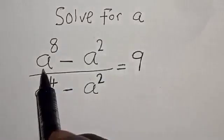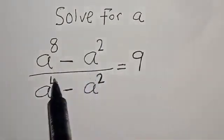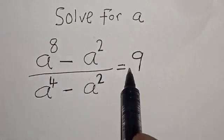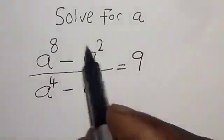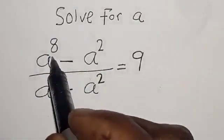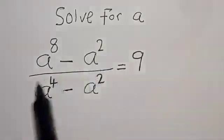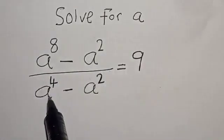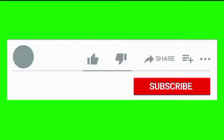Solve for x: a raised to power 8 minus a squared, divided by a raised to power 4 minus a squared, is equal to 9. Hi everyone, welcome to my class. In this class we want to find the value of a from this given equation: a⁸ minus a² divided by a⁴ minus a² is equal to 9.